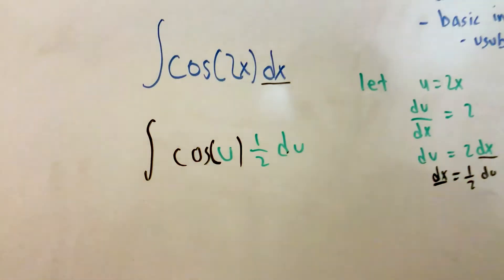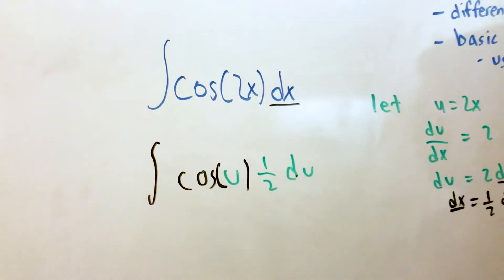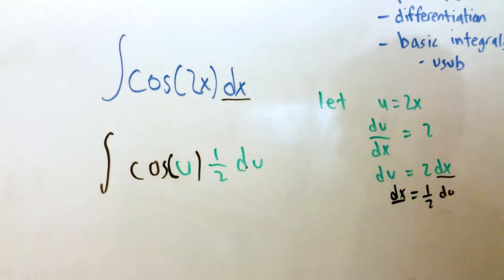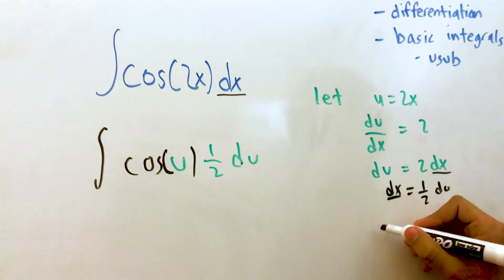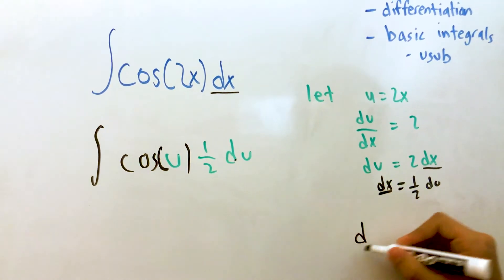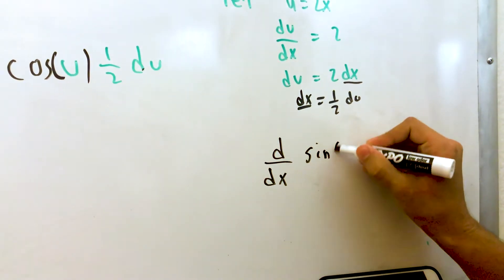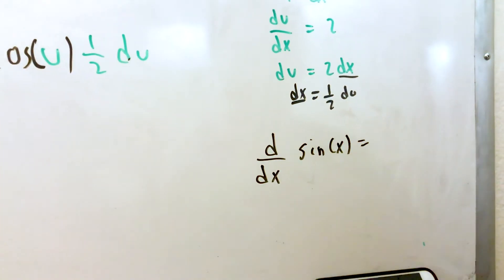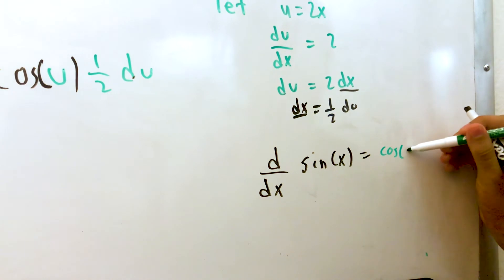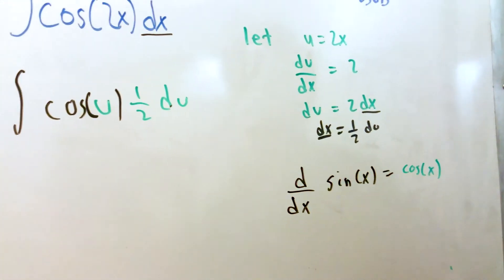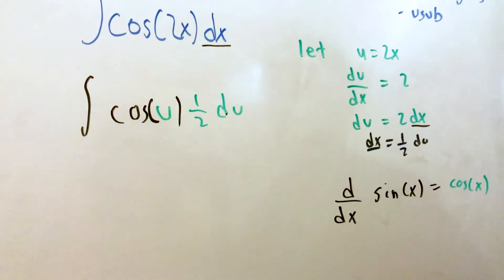So if you integrate cosine, what derivative gives you cosine? So let's think about this for a second. So if we recall, d dx of sine of x is going to be cosine of x. So the anti-derivative, or the integral of cosine of x, is going to be sine of x.